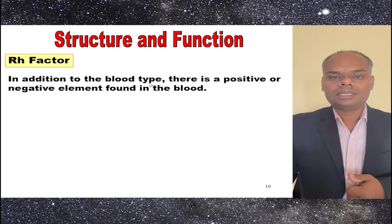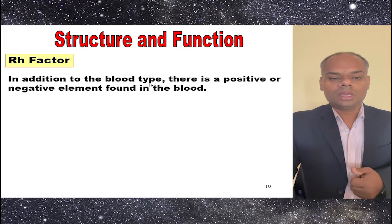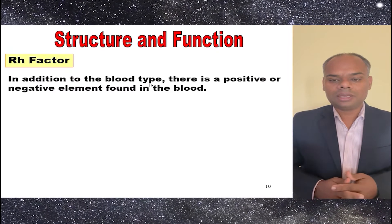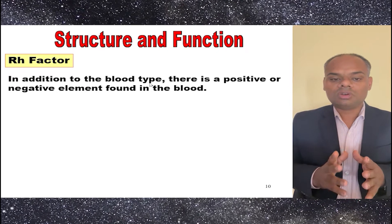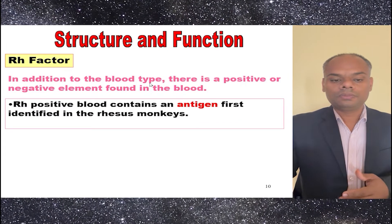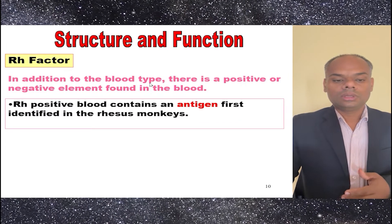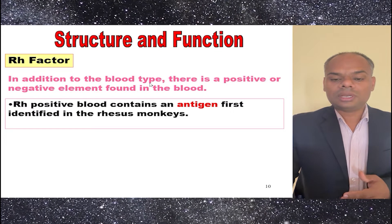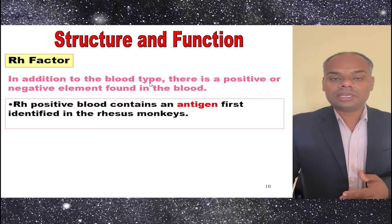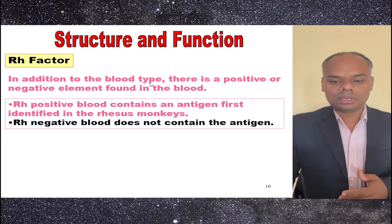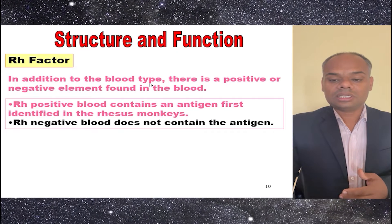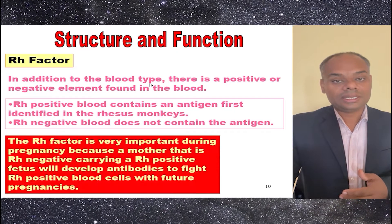Next is the RH factor. In addition to blood type, there are positive or negative elements found in the blood. RH positive blood contains an antigen first identified in the rhesus monkey. RH negative blood does not contain the antigen.